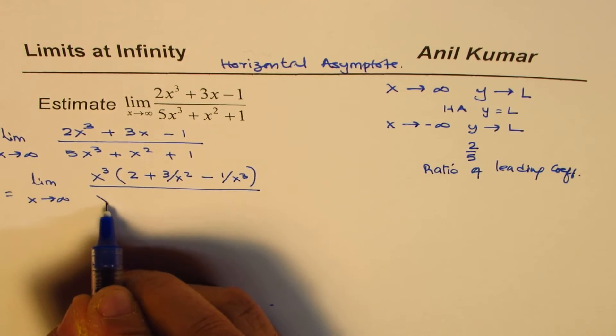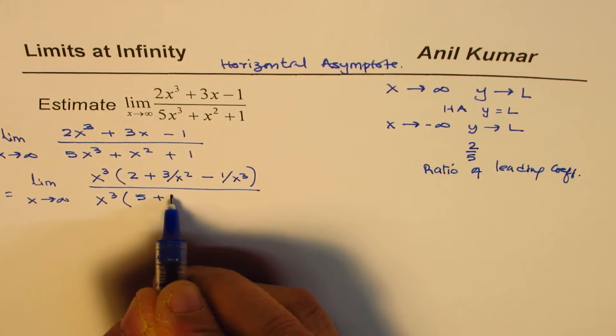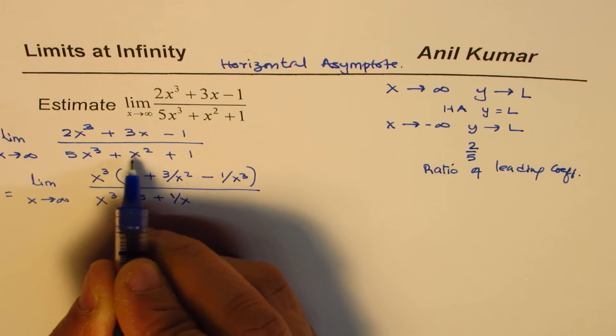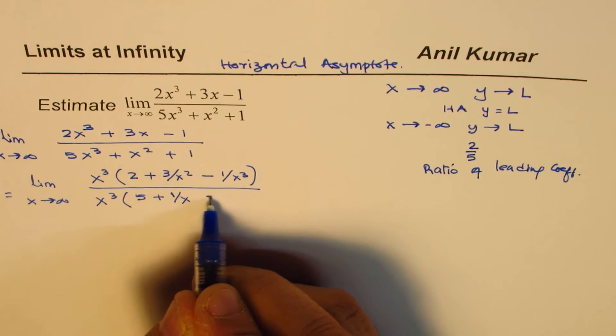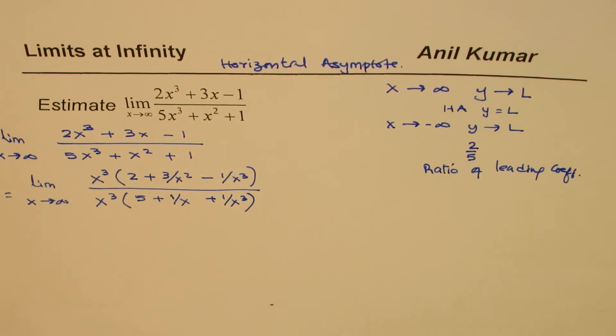And the denominator is, I'm taking x³ common, so I get 5 + 1/x + 1/x³. This is always your first step. Now x³ and x³ cancel out. Do you see that?